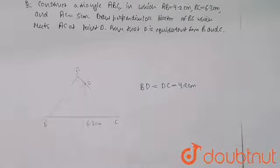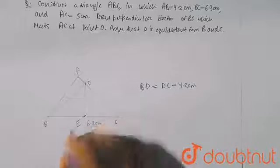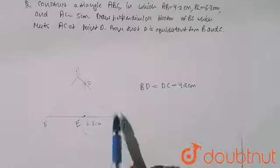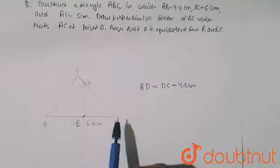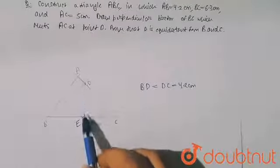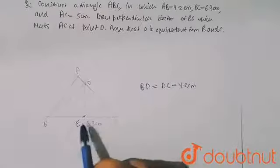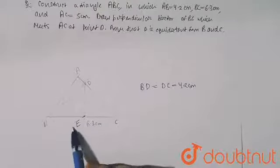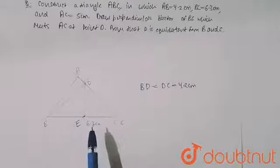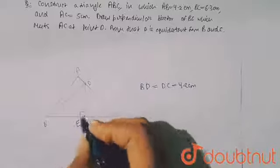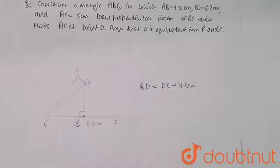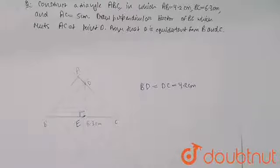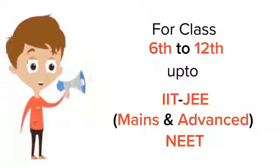Let point E be on BC where the perpendicular bisector meets it. In triangle DBC, DE equals DE (common side), and BE equals EC because we drew a perpendicular bisector, so it divides BC into equal parts. The angle is 90 degrees, so by the Side-Angle-Side property, the triangles are congruent, and therefore DB equals DC. I hope you understand the question. Thank you.